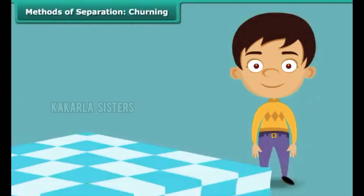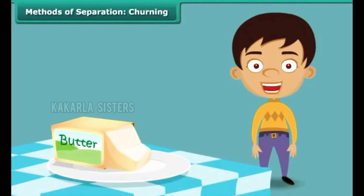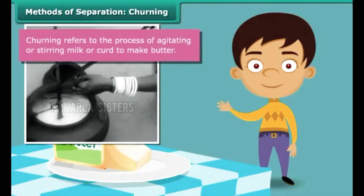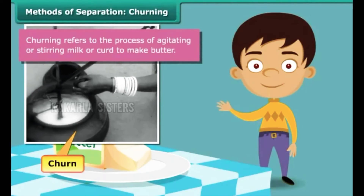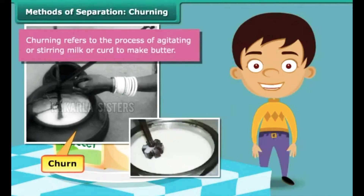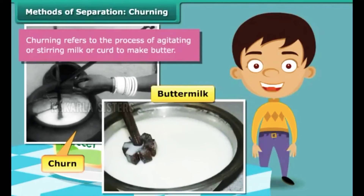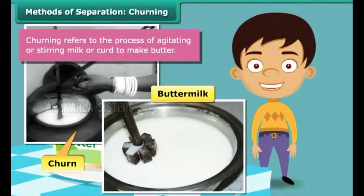This is butter. Do you know how butter is made? When milk is stirred vigorously in a churn, butter is obtained. The liquid left behind is the tasty, nutritive buttermilk that is relished by many as a refreshing summer drink. Do you see that two useful components emerge from a mixture when this method of separation is employed?